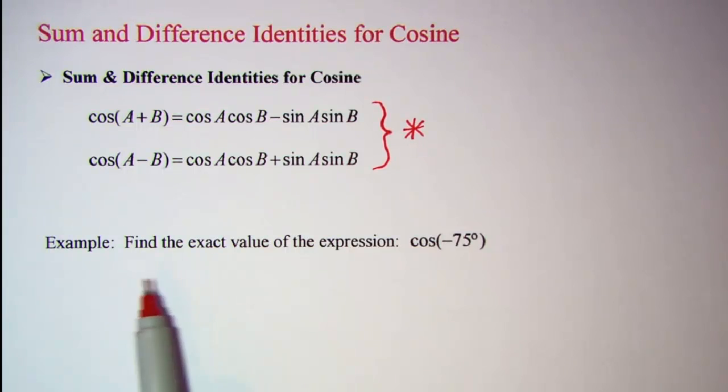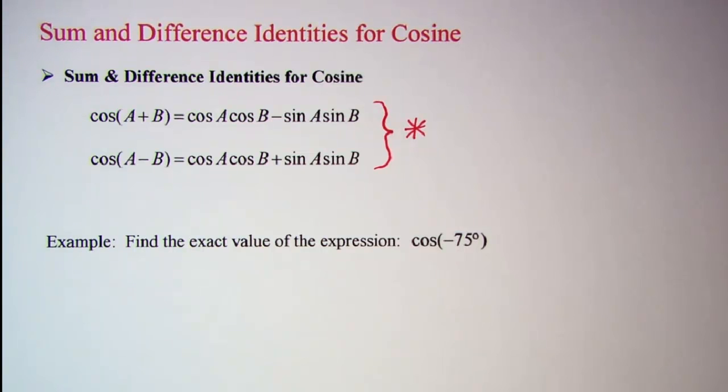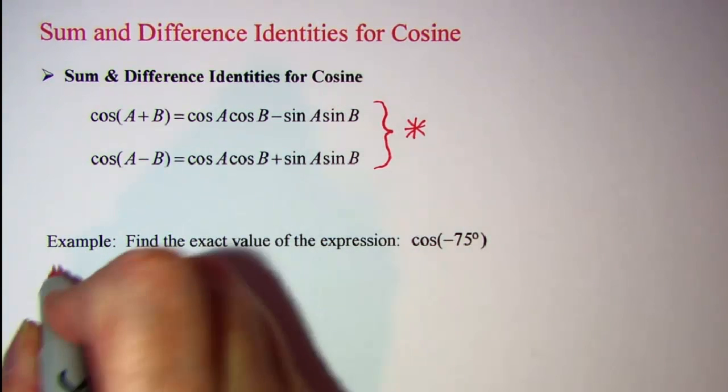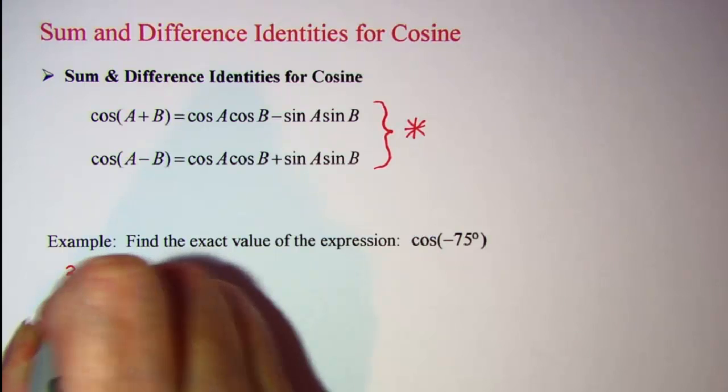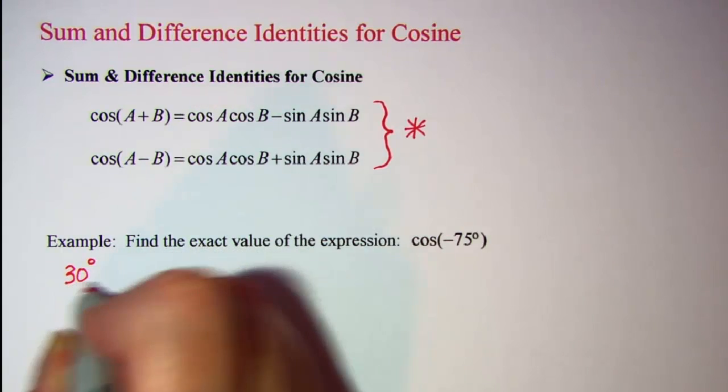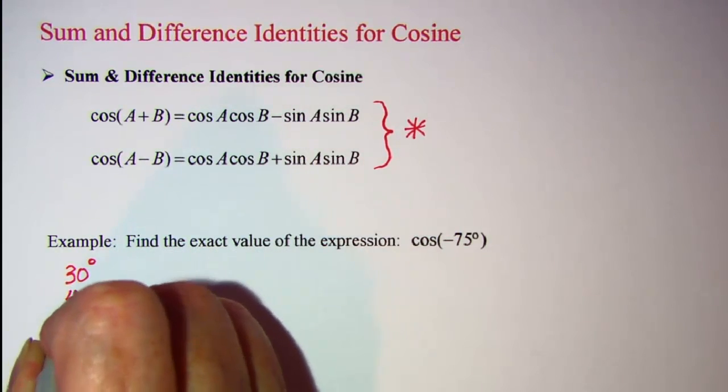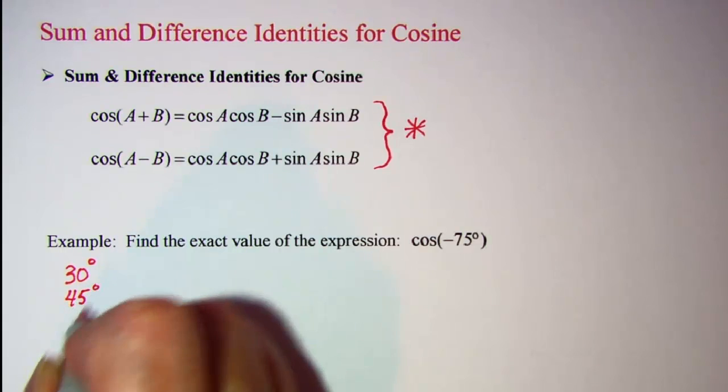The example that we'll be doing is find the exact value of the expression cosine of negative 75 degrees. Now because of this word exact value, that means that we need to use one of our special triangles. So I'm going to list those angles over here on the side. We have 30 degrees and 45 degrees and 60 degrees.